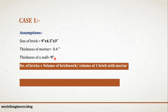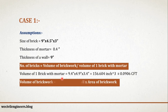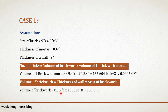If you multiply the thickness of wall with the area of brickwork, then you will get the volume of brickwork. That is 0.75 feet multiplied by 1000 square foot, which is equal to 750 cubic foot. Note that 9 inch is equal to 0.75 feet.